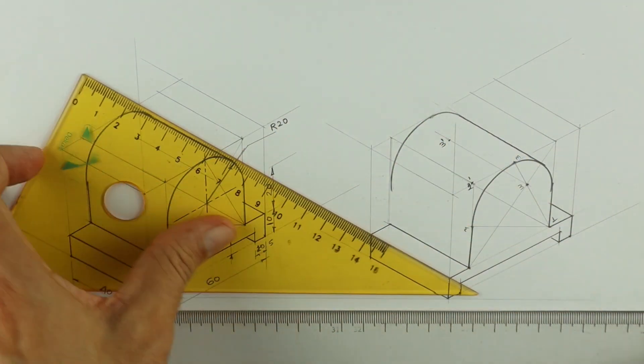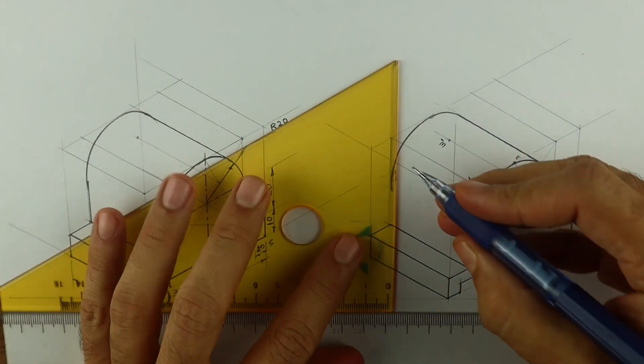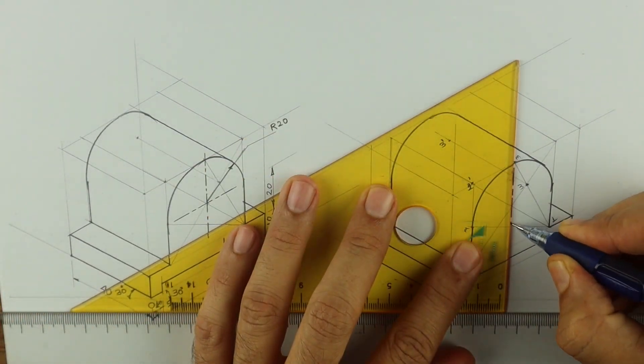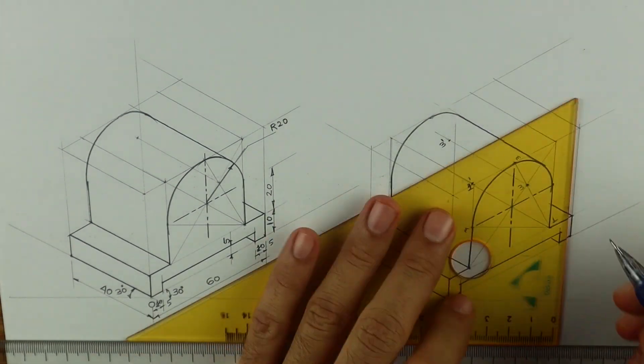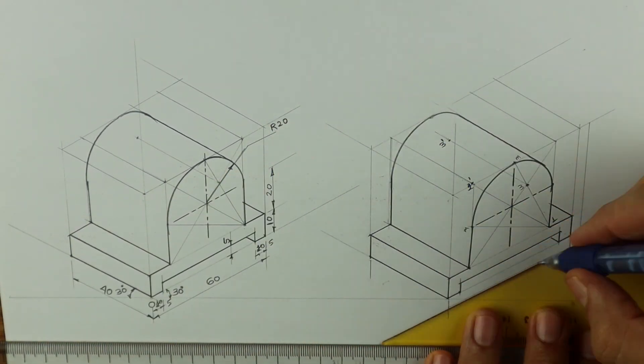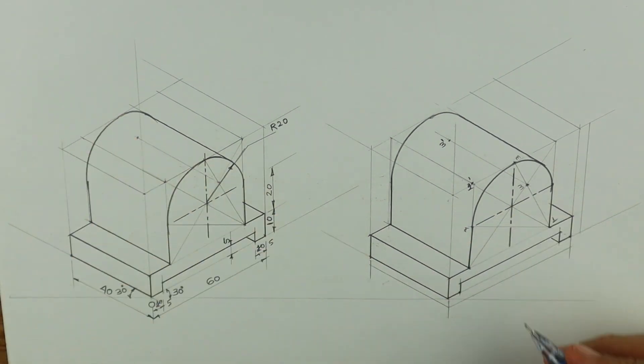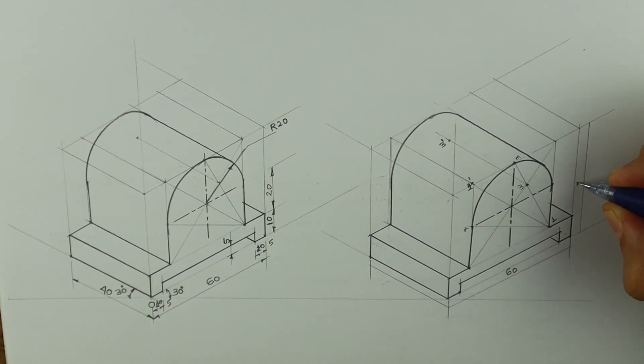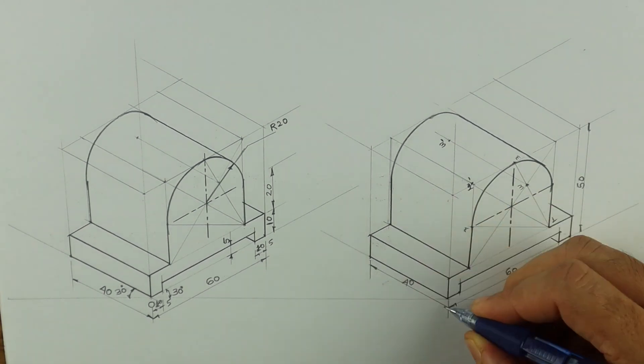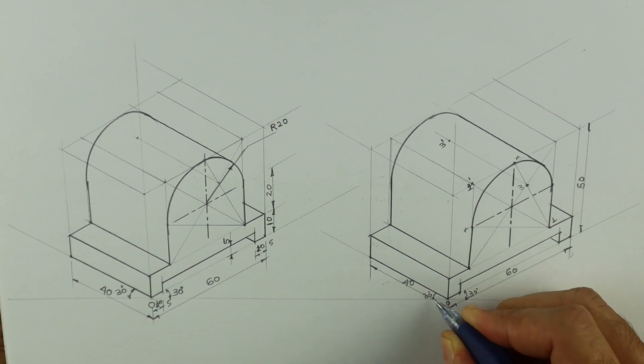It's very important from the technical drawing point of view. They have a topic called copy isometric, and in that we have this. Then we can do axis lines and dimensioning. Thank you.